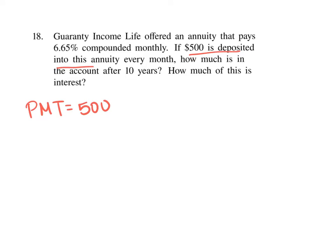We're depositing those payments into the annuity every month. How much is in the account after 10 years? That means that n, if I'm making payments every month for 10 years, 10 times 12, 10 years, 12 months in a year, that's equal to 120 total payments.